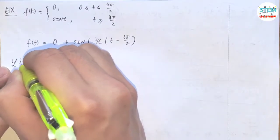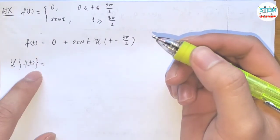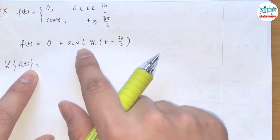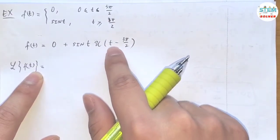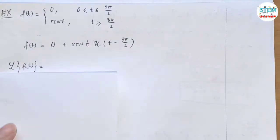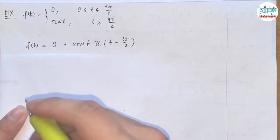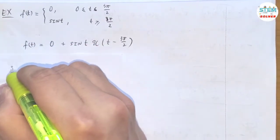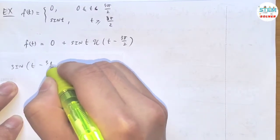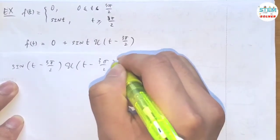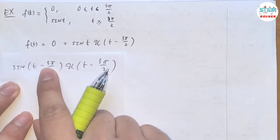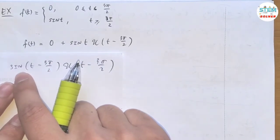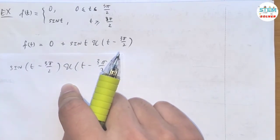Now find the Laplace transform of this. To find the Laplace transform, of course ignore the 0. You need to have the argument match up. In this case, it is t minus 3π/2. So normally, following what we had done previously, you would just subtract it: sin(t minus 3π/2) times u of t minus 3π/2. But the problem is you'd have to use the product rule, and if you don't remember the trig properly you cannot solve it. So I wouldn't do it this way.